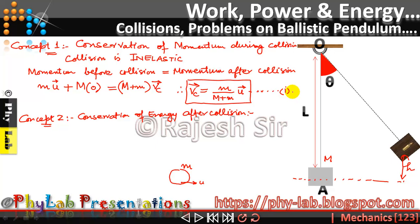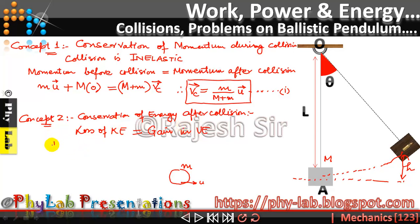From the first equation, I can relate the common velocity of the bullet-block system to the initial velocity of the bullet before collision. Now the second concept is conservation of energy after the collision. After collision, the bullet-block system has a common kinetic energy, and this kinetic energy slowly gets converted into potential energy as the system rises. Loss of kinetic energy equals gain in potential energy. The kinetic energy of the bullet-block system is ½(M + m)Vc².